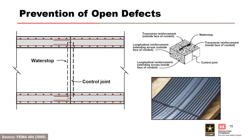This slide shows methods to prevent open defects from occurring. On the left, we have a control joint used in reinforced cast-in-place concrete conduit construction with longitudinal reinforcement continuous through the joint. On the right, we have an example of a water stop placed across the joints of conduits to stop water from coming through. On the top right is a typical water stop detail, and on the bottom right is a typical water stop used in conduit construction.